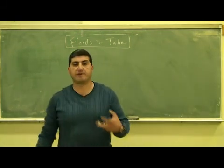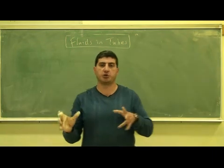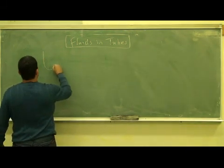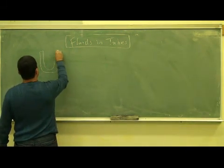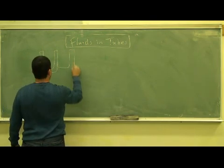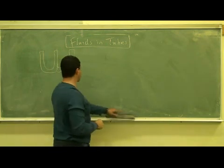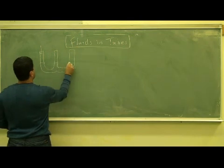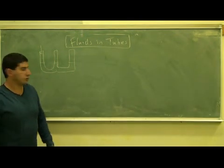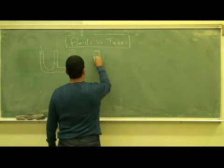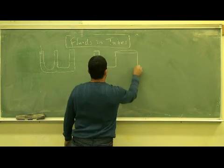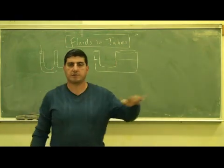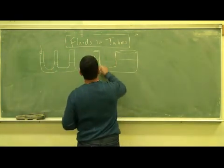Let's talk about the concept of fluids in tubes. If you have two or three tubes connected and you fill them with water, the water reaches the same height in all the tubes — even if one tube has a smaller diameter and another has a thicker diameter, the water still goes to the same height.